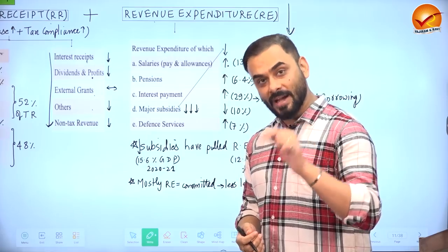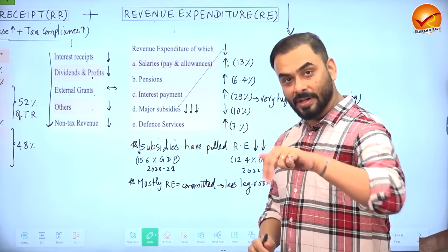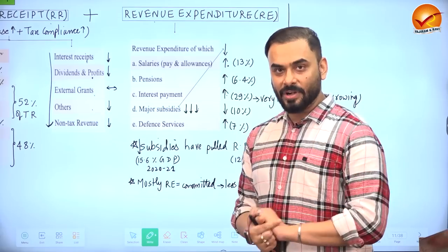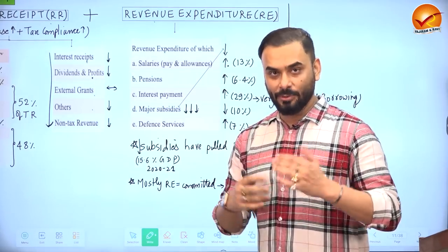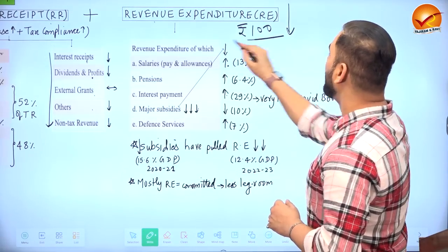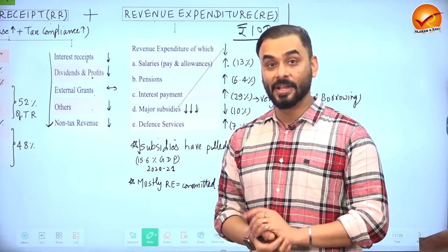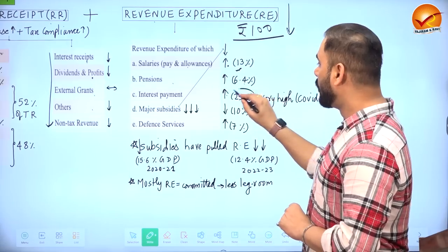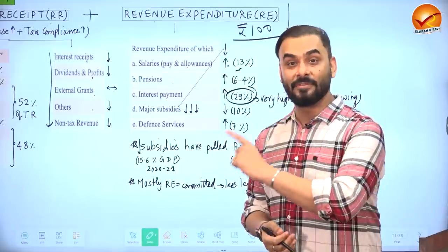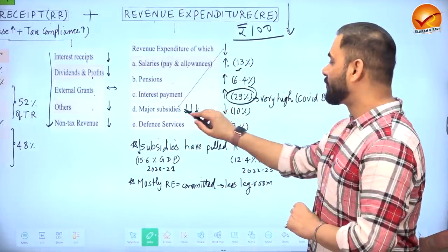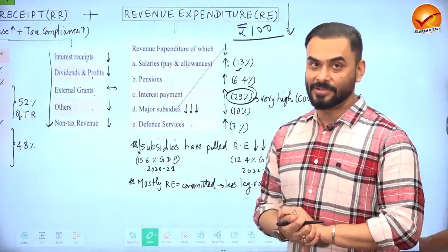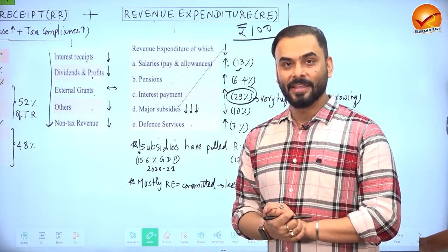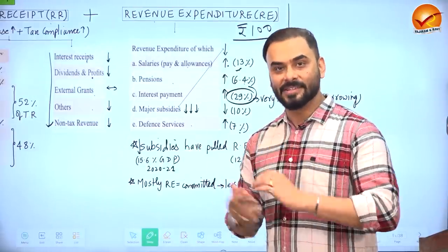On the revenue expenditure side, salaries, pensions, and interest payments have all increased. During COVID the government had increased subsidies significantly, but after COVID those subsidies have been gradually phased out. The reduction in subsidies has been large enough that it led to an overall reduction in revenue expenditure of the Government of India as a percentage of GDP.